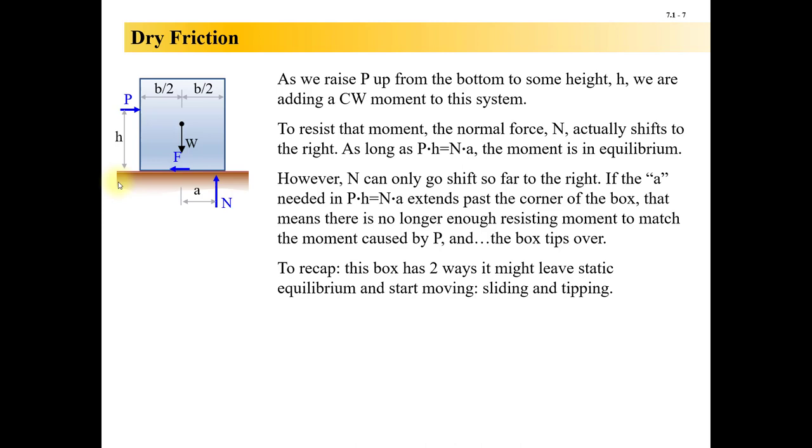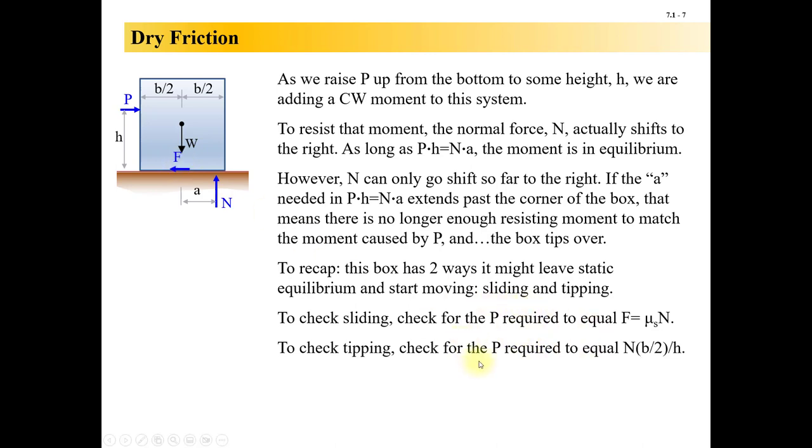So in summary, we've kind of talked about two different ways that this box could start moving. One, it could slide across the floor. If you're trying to move the box, that's the one you want. Tipping it over is the other one where you're pushing your force P high enough that it's wanting to topple over and rotate about this front corner. To check sliding, we check to see if our force P is greater than or equal to our maximum friction force of mu_s times N. To check for tipping, we check for the force P that would be required to cause that moment to occur, such that a is maximum, where a is b over 2. So this is N times a over h would give us P.